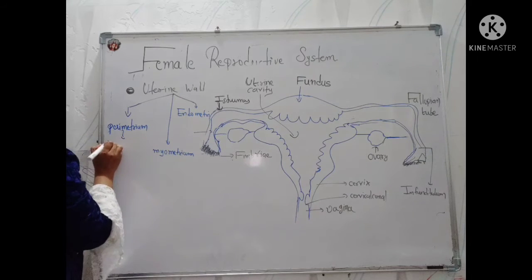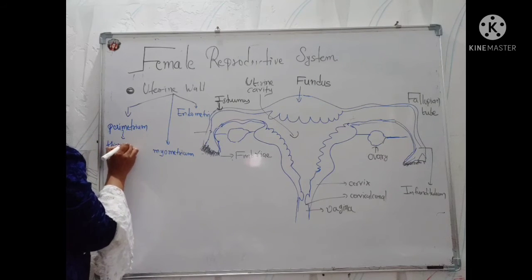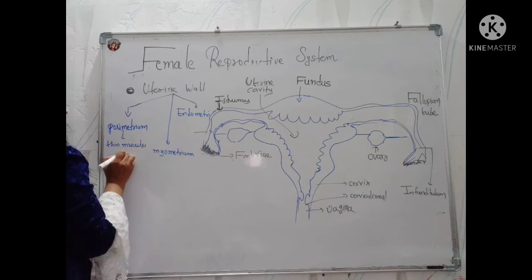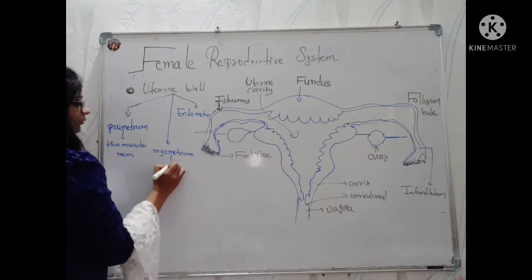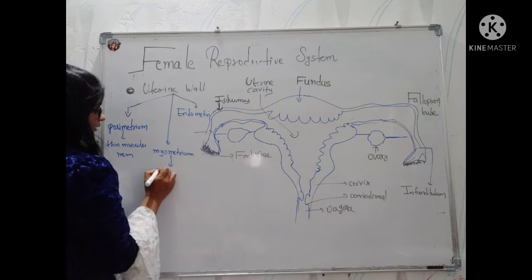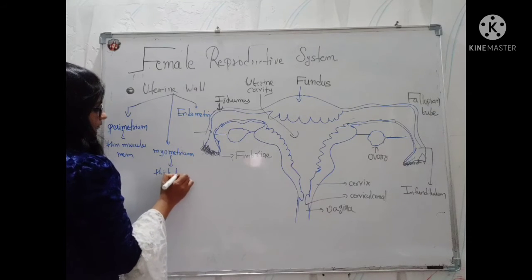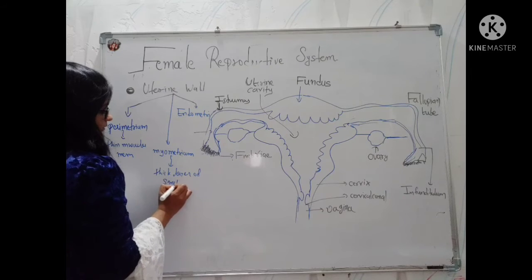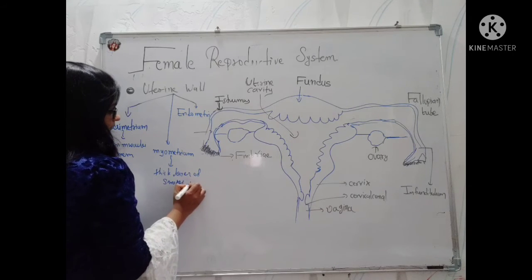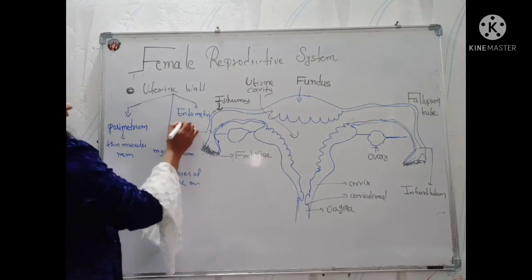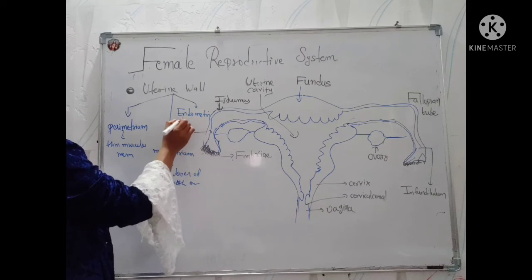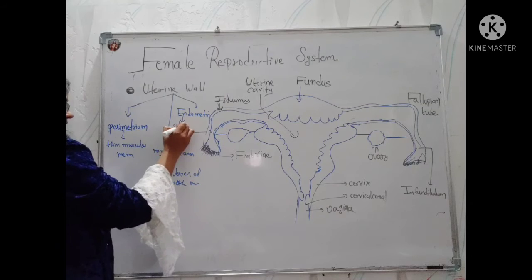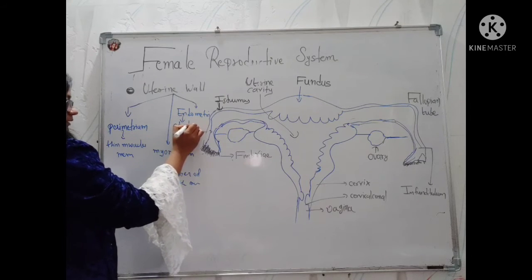The perimetrium is a thin muscular layer, whereas the myometrium is made up of a thick layer of smooth muscles. The endometrium is the internal structure which has glandular and vascular layers.